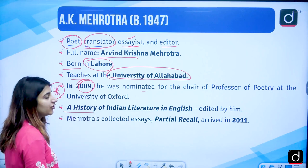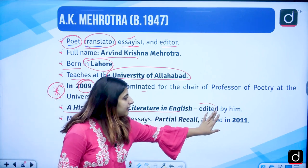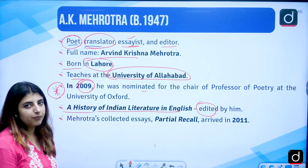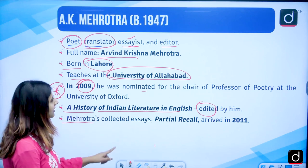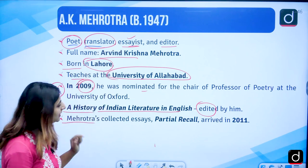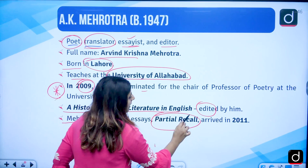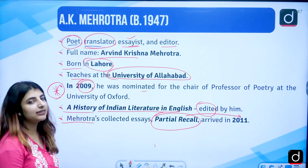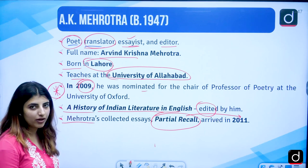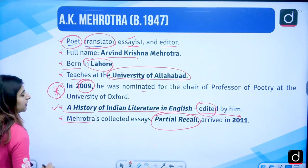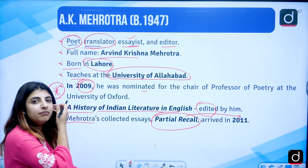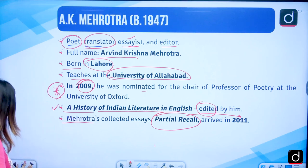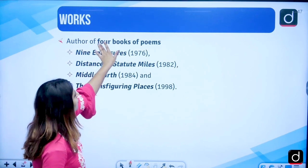A History of Indian Literature in English is edited by him — we refer to this very particular book when we read about Indian literature. Mehrotra's collected essays, because he has been an essayist as well, titled Partial Recall, was published in the year 2011. He has been the author of four books of poems, and you need to note these in chronological order.